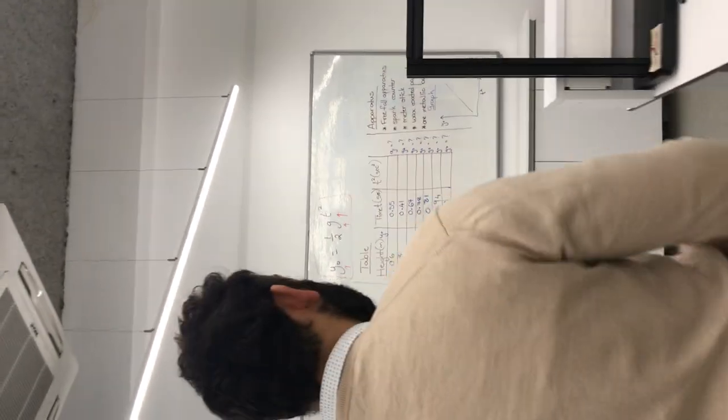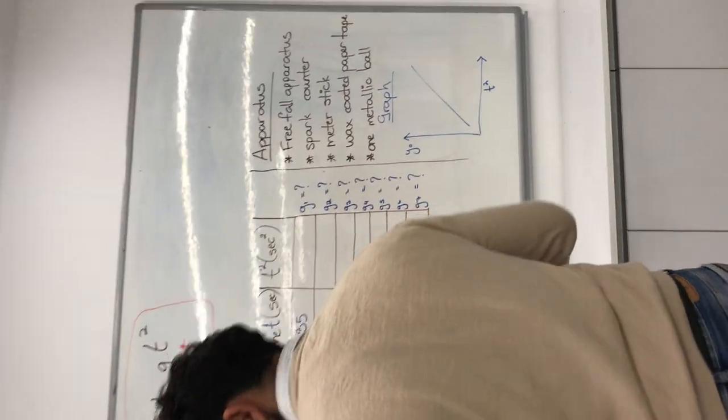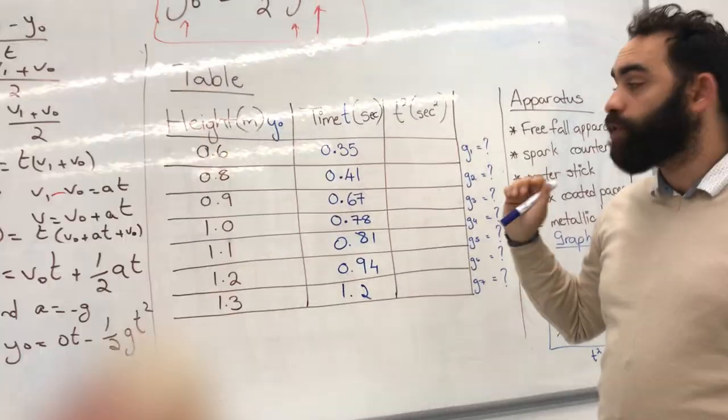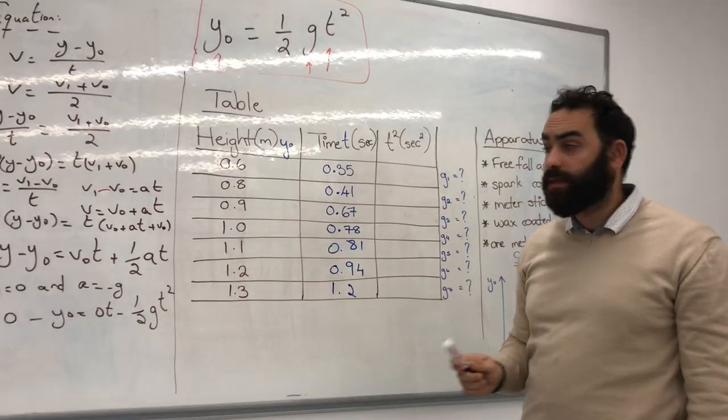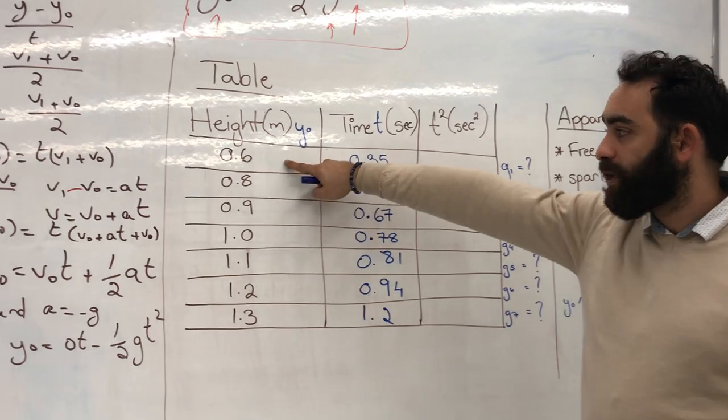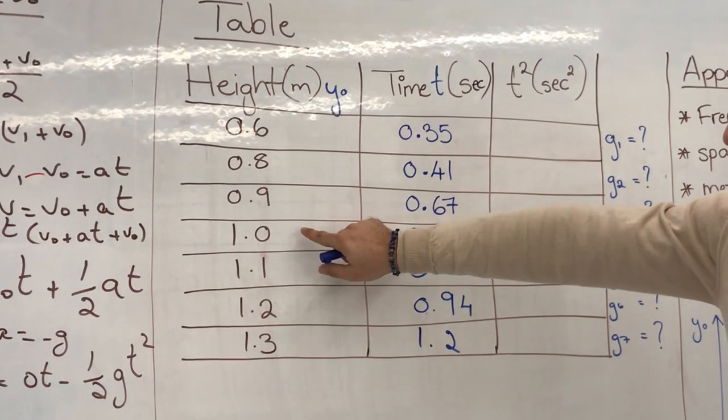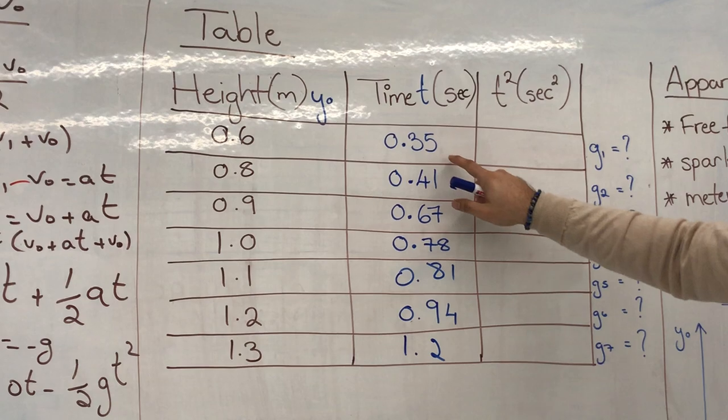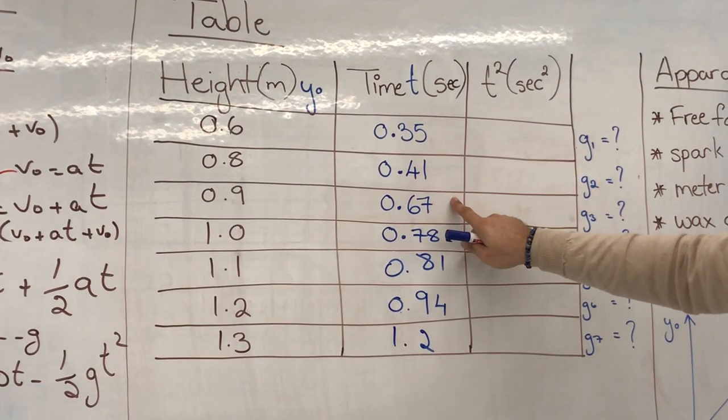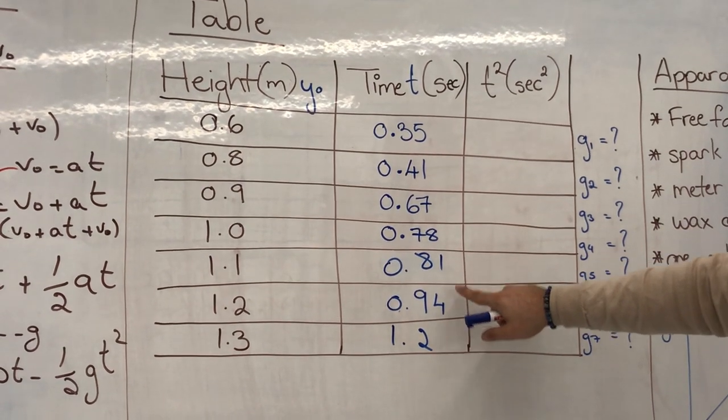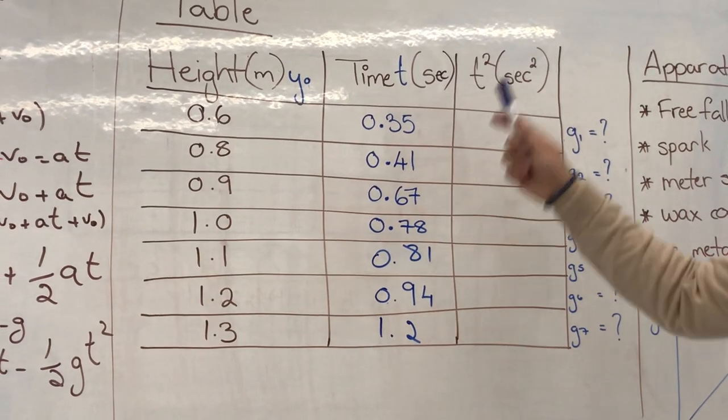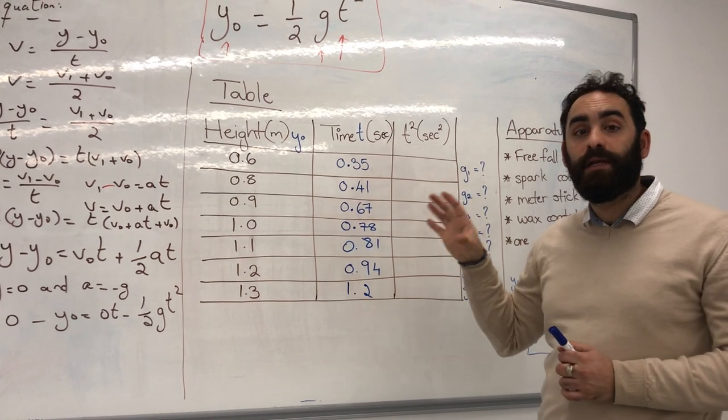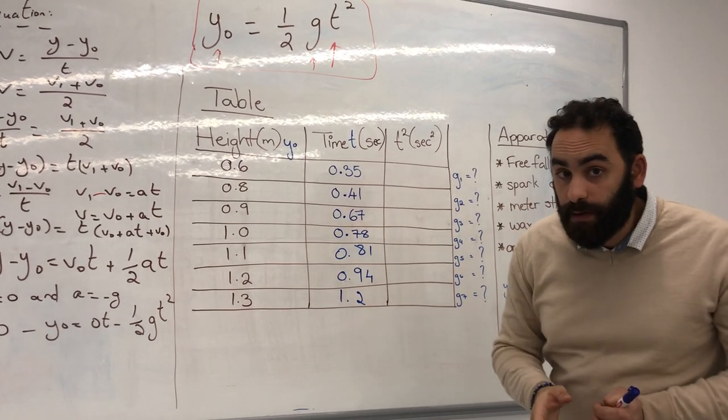So, if we go back to our table, this is where the second thing I require from you guys. All the tables should be the same. So, I should be able to see these tables in your report. Again, the same values. 0.6, 0.8, 0.9, 1, 1.1, 1.2, 1.3 for the height in meters. Time in seconds, 0.35, 0.41, 0.67, 0.78, 0.81, 0.94, and 1.2 seconds. This table, I should see it exactly in your report. If I don't see this exact table in your reports, you will get a 0.